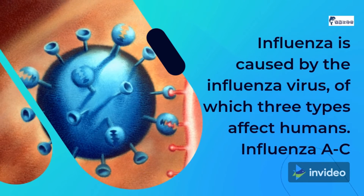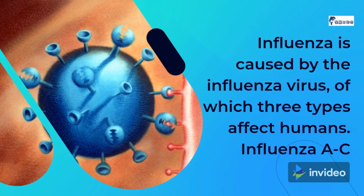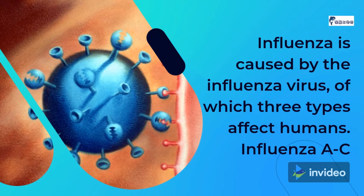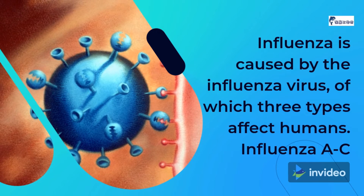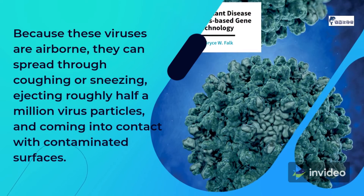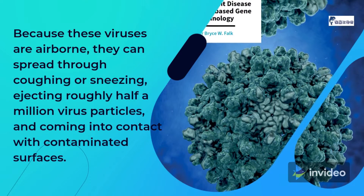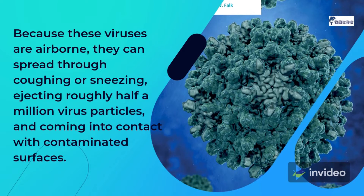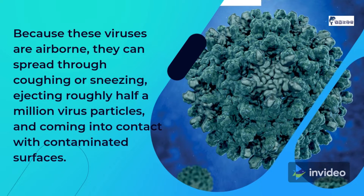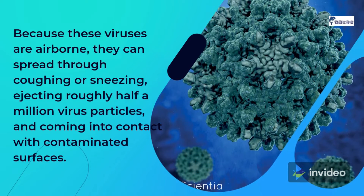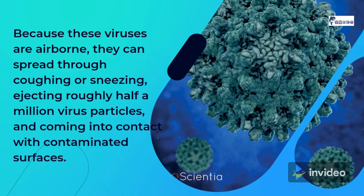Influenza is caused by the influenza virus, of which three types affect humans. Because these viruses are airborne, they can spread through coughing or sneezing, ejecting roughly half a million virus particles, and through coming into contact with contaminated surfaces.